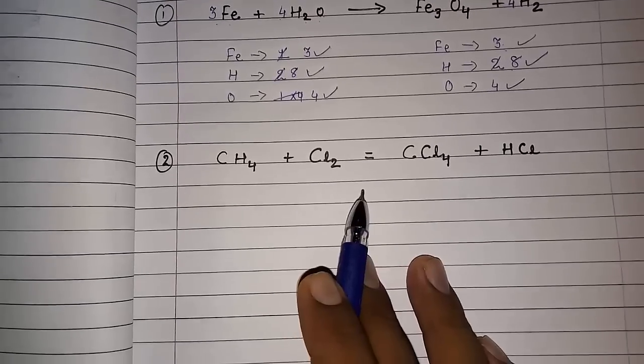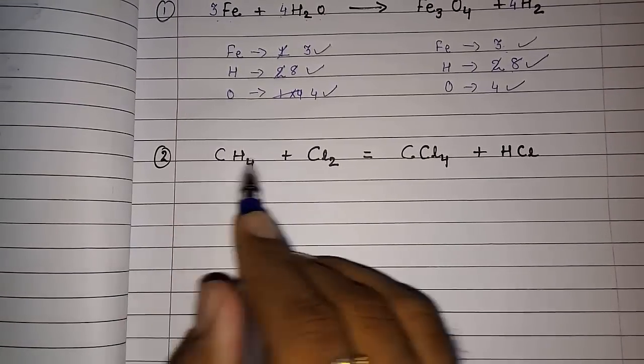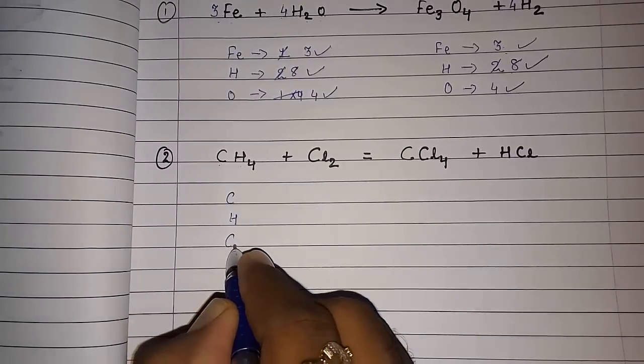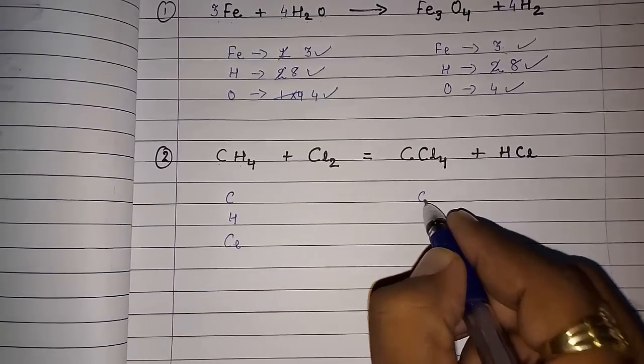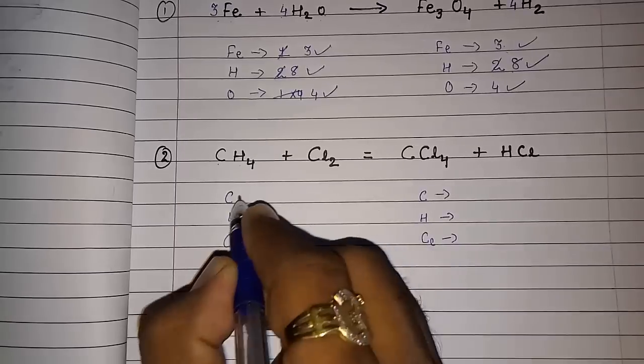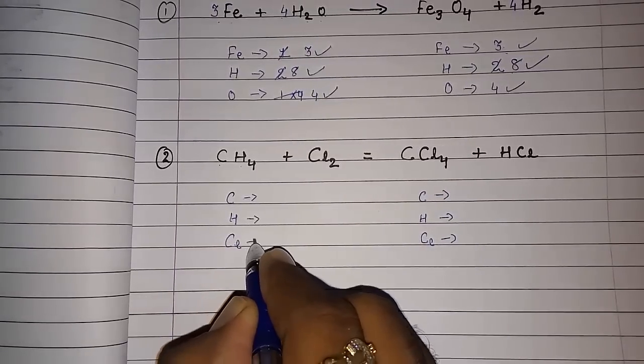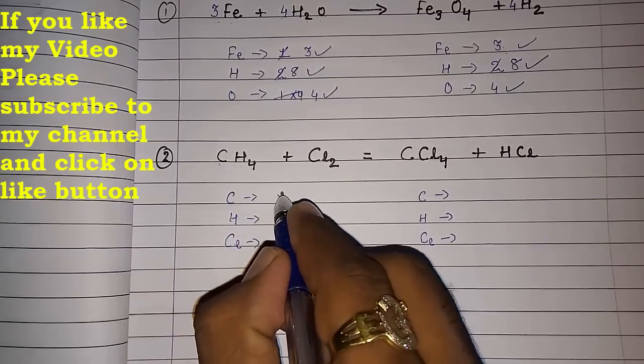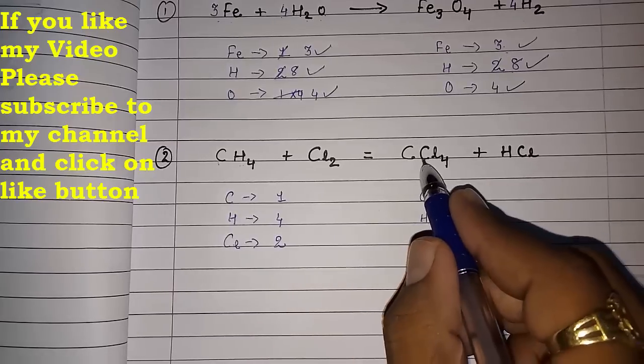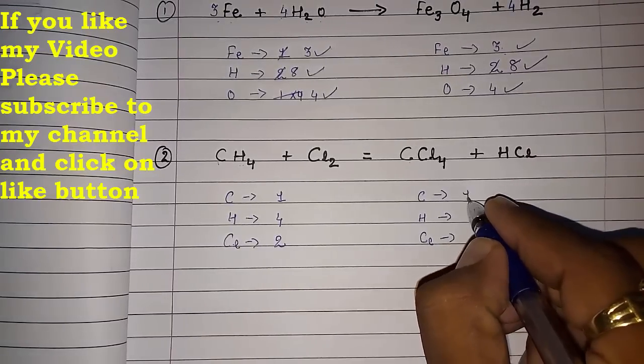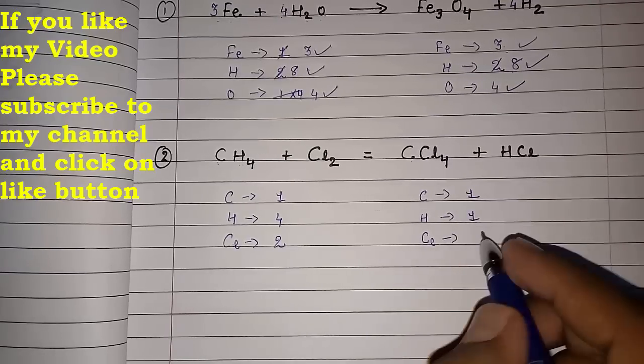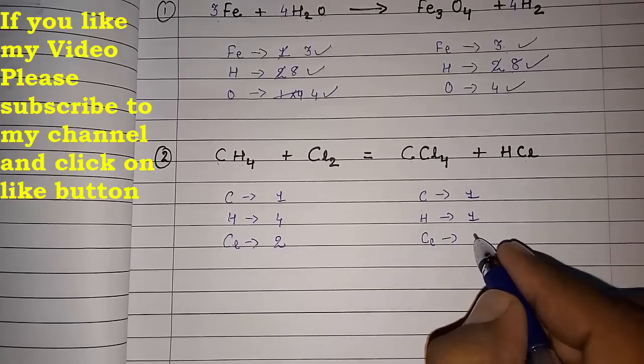I am going to explain this second equation also so that you come to know it clearly. Look here. It's carbon, hydrogen and chlorine. So carbon, hydrogen, hydrogen and chlorine. Here also carbon, hydrogen and chlorine. How many atoms are there in LHS and in RHS? First we have to make a list of that. Carbon one, hydrogen four, chlorine two. Here carbon one, hydrogen also one and chlorine is one and four, total five.